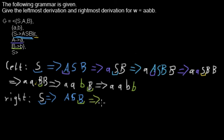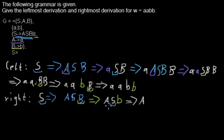Now I have a and S that were there before, and I replace the b by the terminal b. Then because I'm doing the rightmost derivation, I proceed with the S and replace it again by aSb. So I have the a that was left from before, then I replace the S by aSb, and I have the b that was there before behind the S.